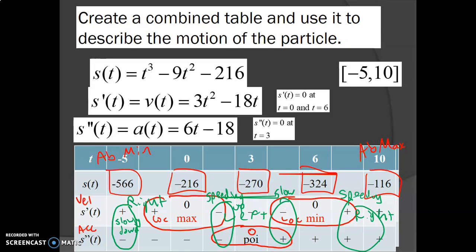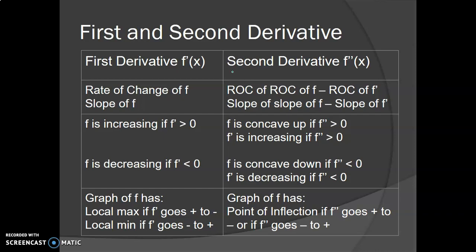The last thing in this unit: the first derivative tells you the rate of change of f, another name for which is slope. The first derivative tells you if f is increasing or decreasing. We'll come back to these summary tables in the second half of the video — that's it for part one.